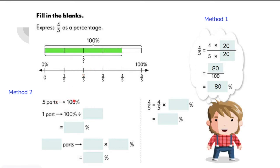So the 5 parts is actually equal to 1 whole or 100%. And if we want to get 1 part of it, we just need to divide 100% by 5. 100% divided by 5 is equal to 20%. Now let's take a look at the question.